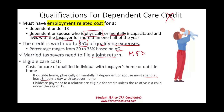Childcare payments to a relative are eligible. You can pay your parents, mother, father, or brother to take care of your child and count those as eligible payments, unless the child caregiver is under the age of 19. What they're trying to avoid is paying your own kids to look after your other kids — so if the caregiver is under age 19, that is not a qualified expense.